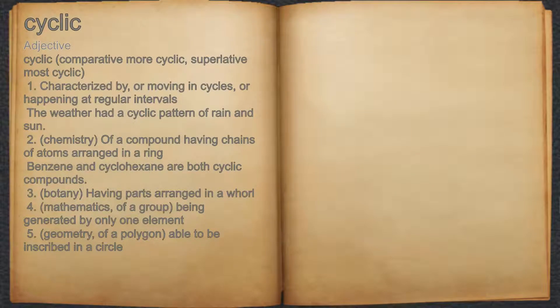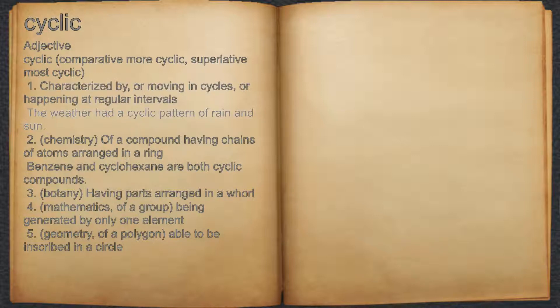Cyclic. Adjective. 1. Characterized by, or moving in cycles, or happening at regular intervals. For example, the weather had a cyclic pattern of rain and sun.